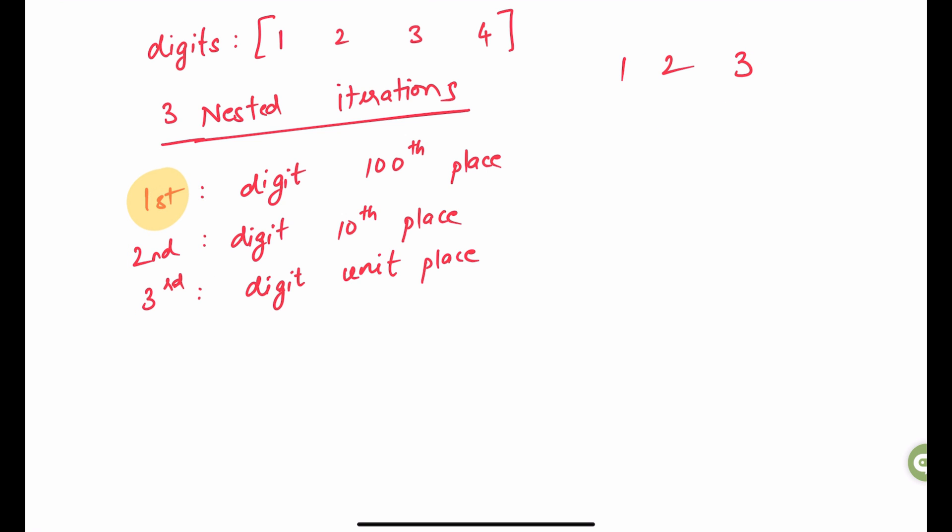And if I were to represent these iterations in the number, the first iteration will help us determine the number at this position, the second iteration is for this position and the third would be for this one. And there are a couple of more rules we can use to make sure our results are valid.